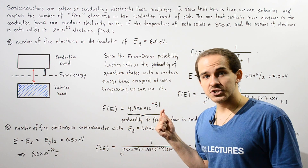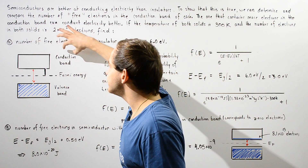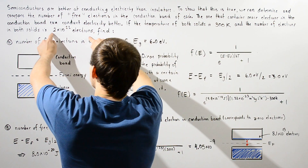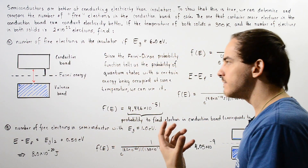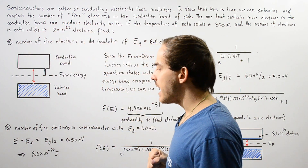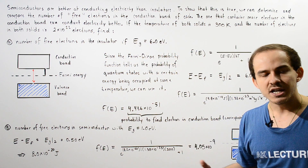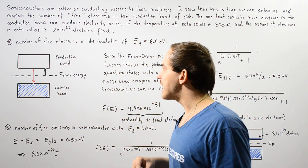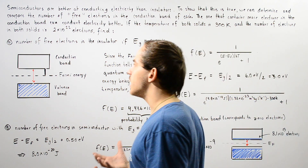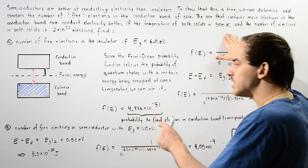This gives us the probability of an electron occupying our conduction band. Multiplying this probability by the total number of electrons gives us the number of electrons that occupy the conduction band. Because multiplying these values gives a number less than 1, no electrons are actually found within our conduction band, meaning the insulator does not conduct electricity at this temperature.